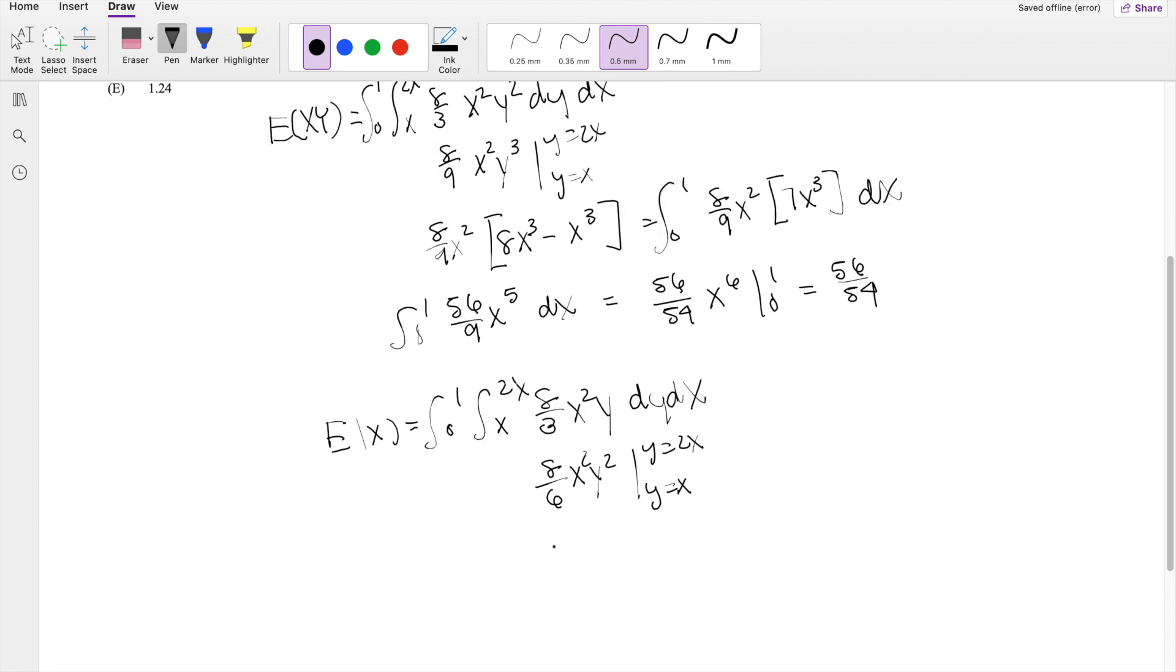So then you get 4 thirds x squared. Putting in the upper limit, you get 4x squared minus the lower limit, you just get x squared. So this is equal to, still integrating dx, 4 thirds x cubed. This is just 3x squared dx.